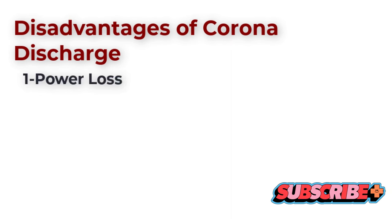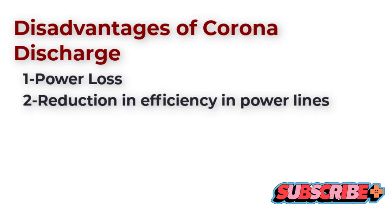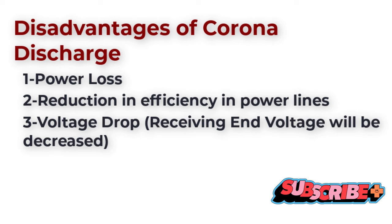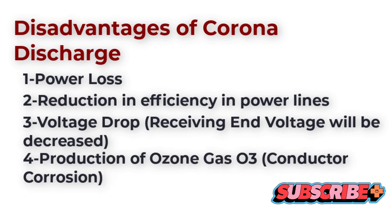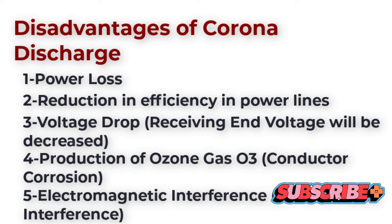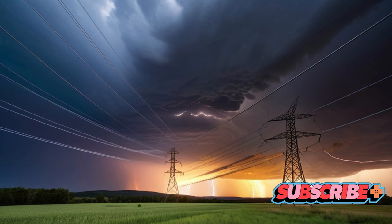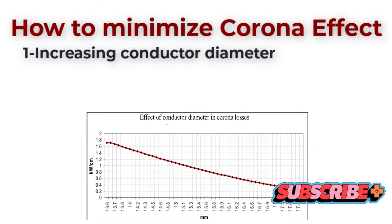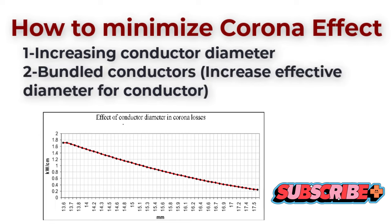However, in controlled environments, ozone production can be beneficial, such as in air purifiers where ozone is used to remove odors and kill bacteria. Corona discharge can also cause radio interference — the rapid changes in the electric field due to the discharge can produce electromagnetic waves, which can interfere with radio communications. Moreover, the discharge can lead to damage to the conductor insulation, as the continuous bombardment of the conductor by ions can cause the insulation to deteriorate over time. Finally, corona discharge is often accompanied by a hissing noise caused by the rapid ionization and deionization of the air around the conductor. The effects of corona discharge are not always negative; they can be beneficial in certain situations.